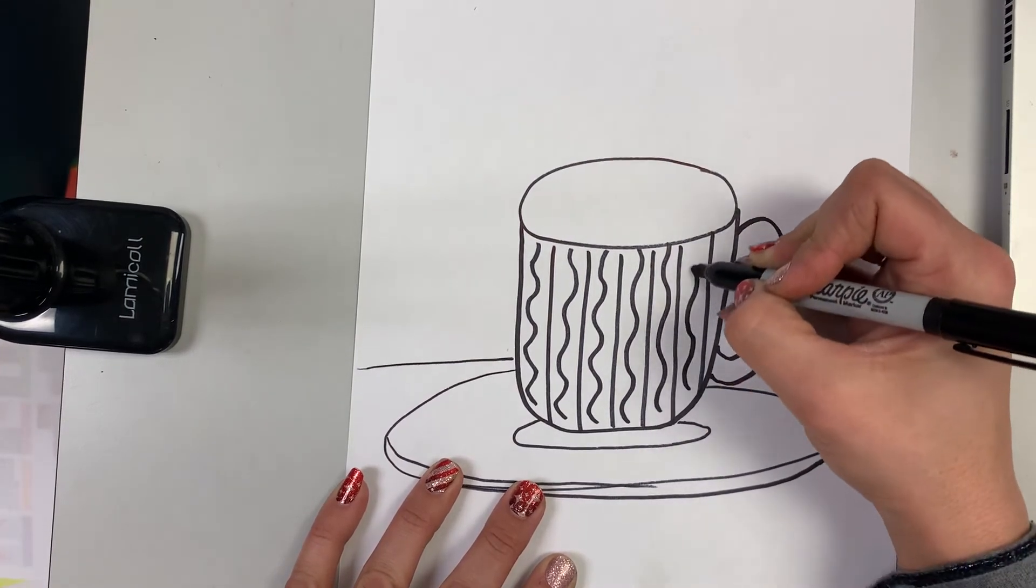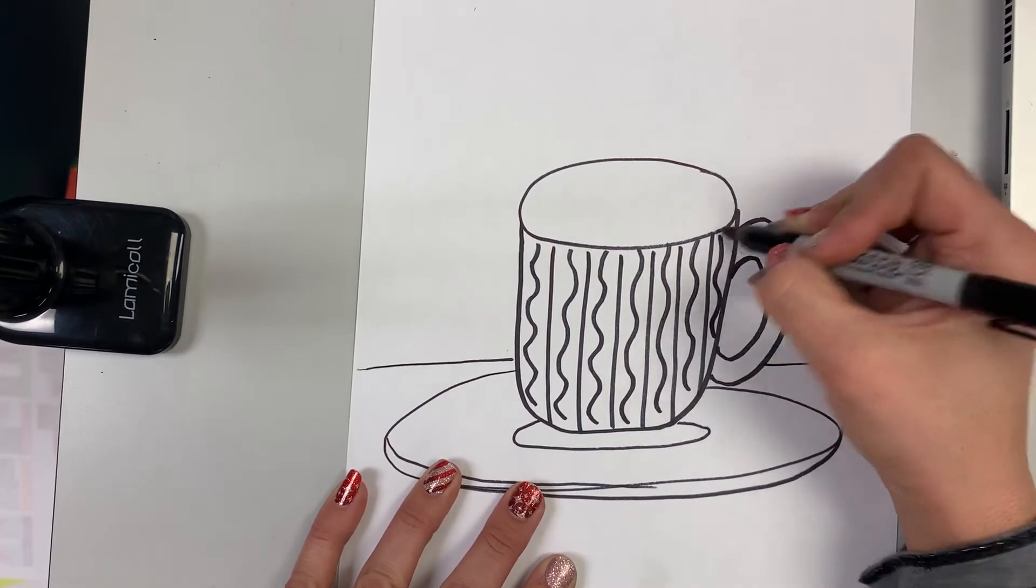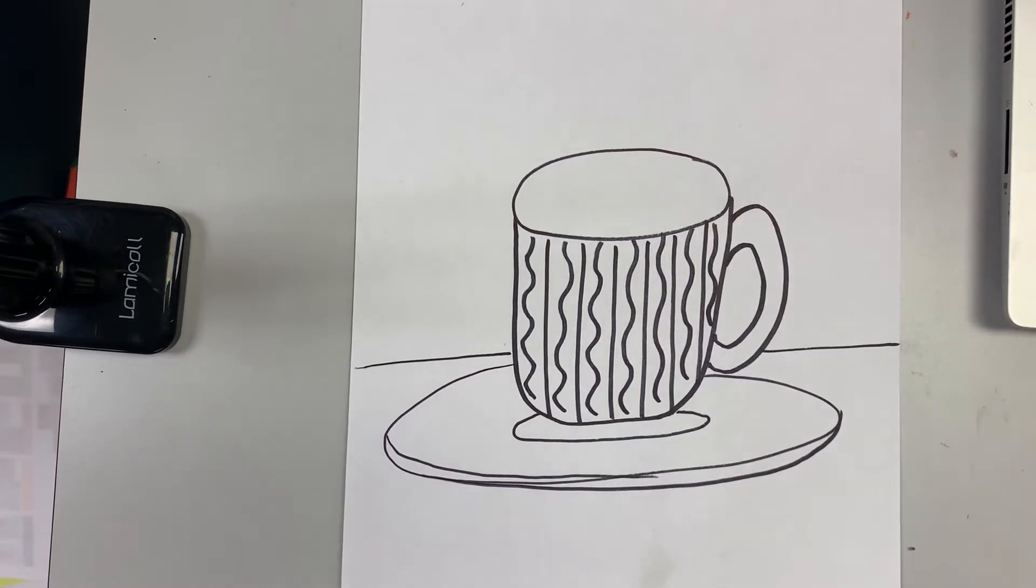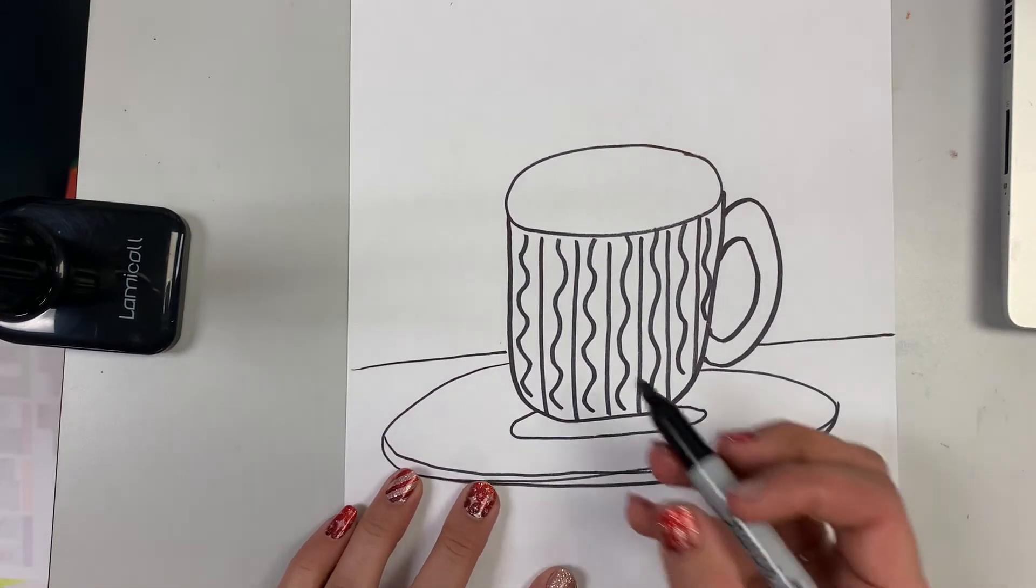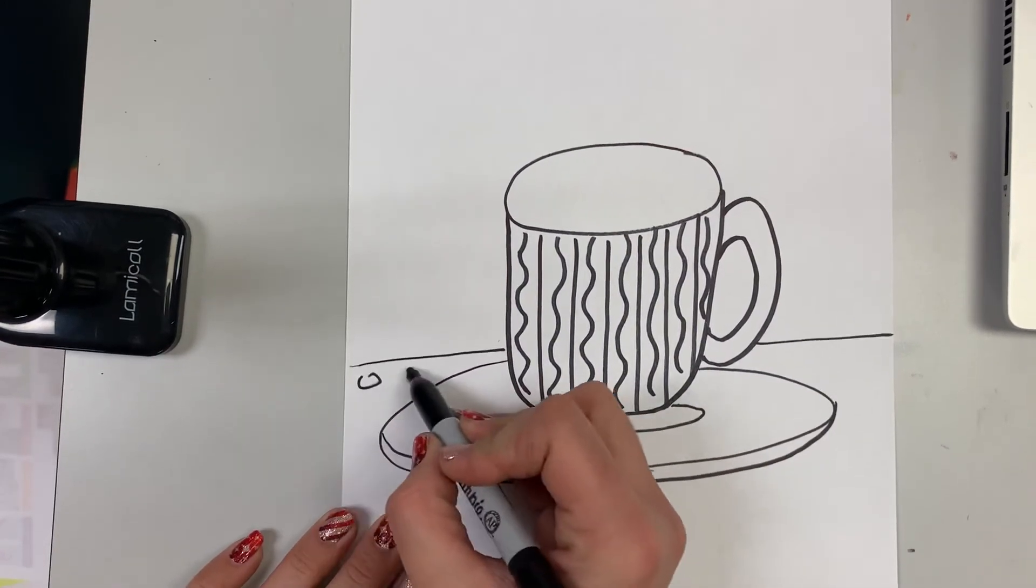And it could be repeating shapes too. So if I'm not repeating lines, maybe what I'm repeating is the shape. So let's say I have circles repeating in the background.